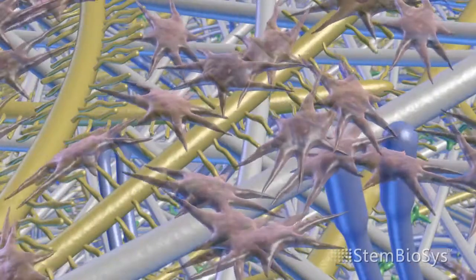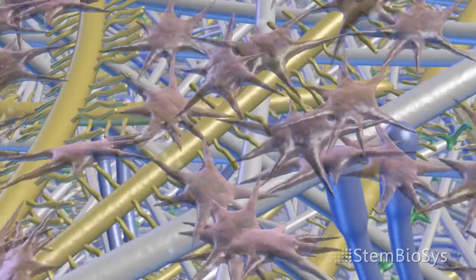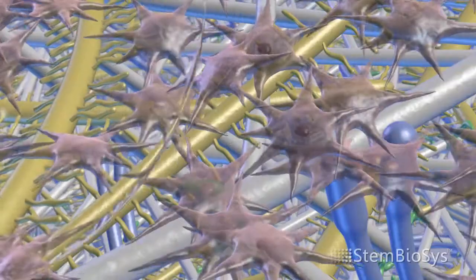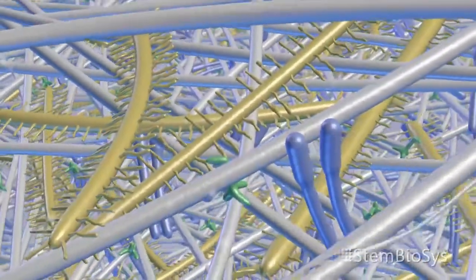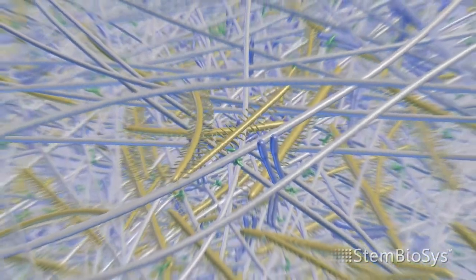Following production of their extracellular matrix, the remaining bone marrow stromal cells are removed, very gently, so as not to change the architecture or the biochemistry produced by the cells.